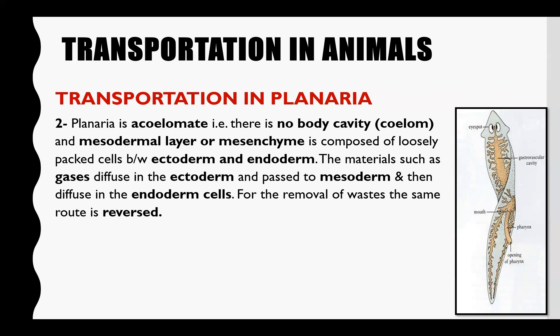The outer layer is called ectoderm and the inner layer is called endoderm. Materials like gases will diffuse and enter, then pass through the mesoderm and go into the endodermal cells. In the same way, when waste gases are removed, carbon dioxide will go from the endoderm through the mesoderm to the ectoderm and then into the surrounding water, because planaria lives in water.